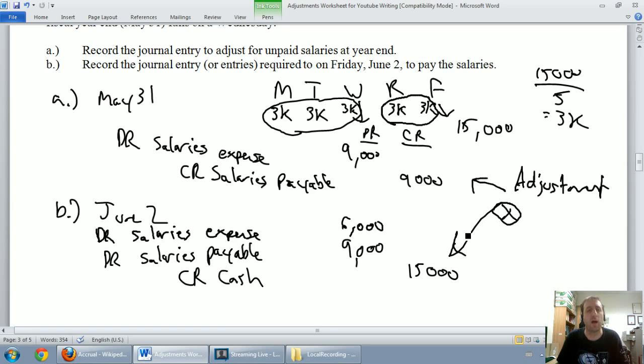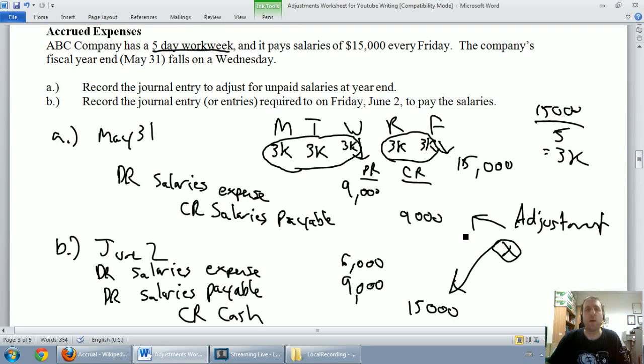That's it for accrued expenses. Again, maybe my weak definition is think of an expense that's built up that hasn't been paid. In this case, our salaries have built up to Wednesday, we owe our employees $9,000. Debit salaries expense, credit salaries payable. Then we went ahead and paid them on our second part of our entry. That's it for this one. Stay tuned for accrued revenues.